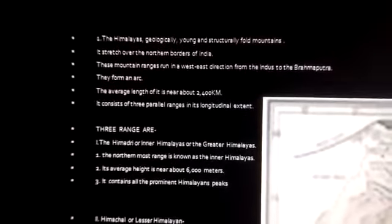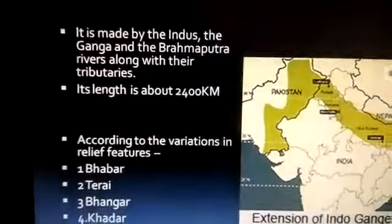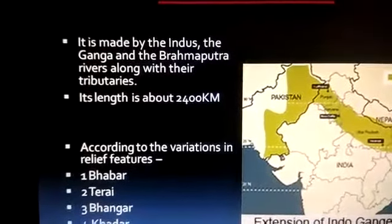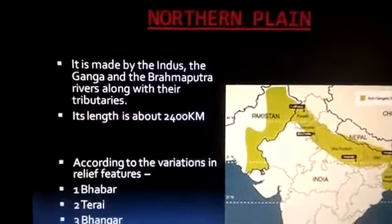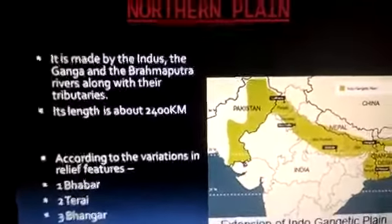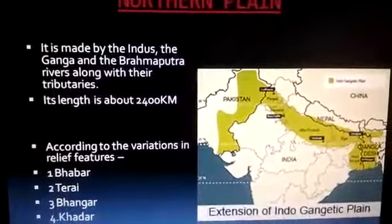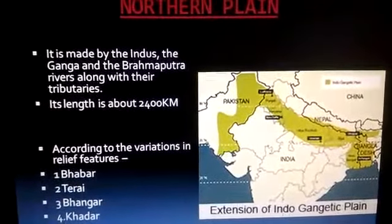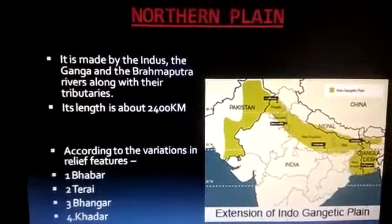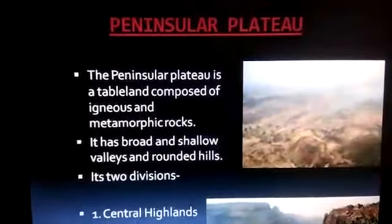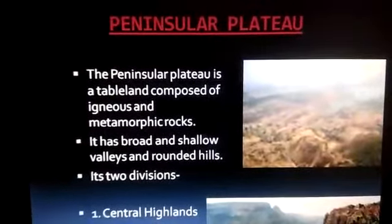The Himalayas consist of different ranges: Himadri, Himachal, and Shivalik. With the help of your NCERT textbook, you will get the details. The northern plains were made by the Indus river system. With the help of this map, you can see that this entire region is known as the northern plain of India.